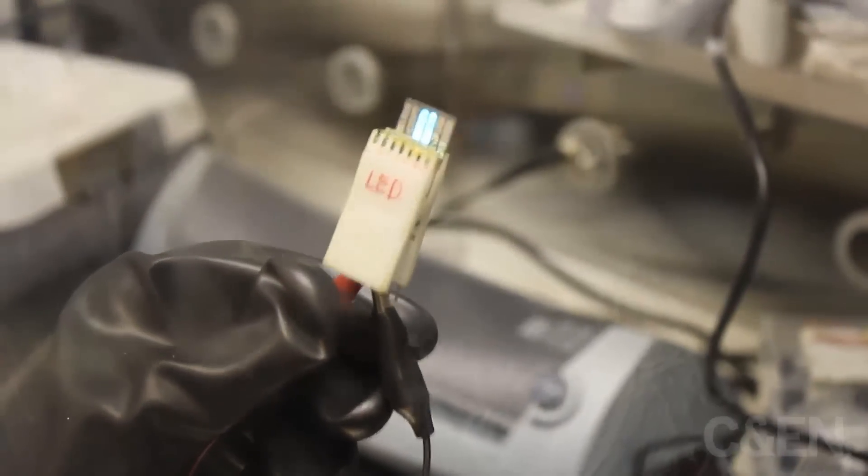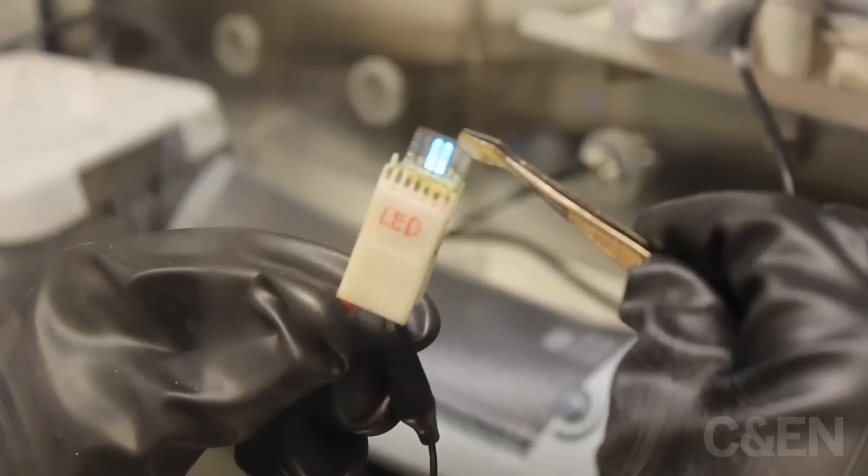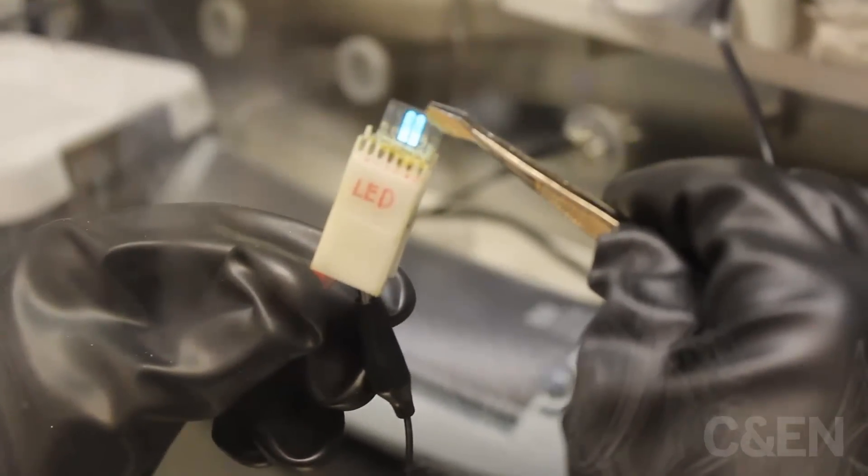We have been working on stretchable polymer light-emitting devices. These are based on two key new materials. One is silver nanowire and polymer composite electrodes.